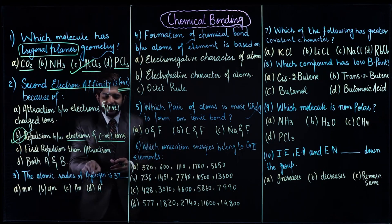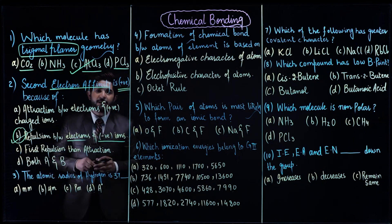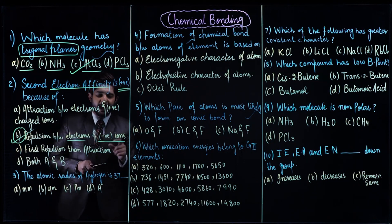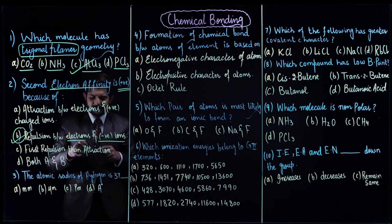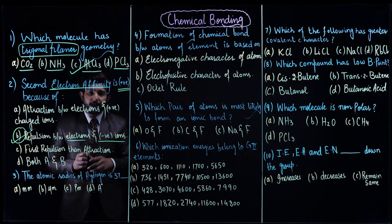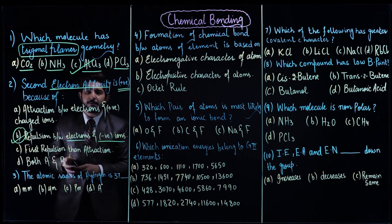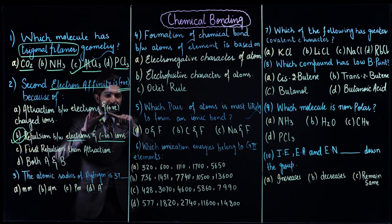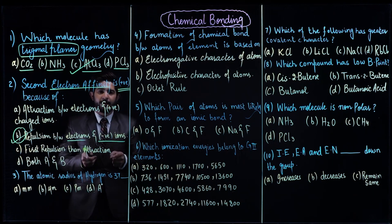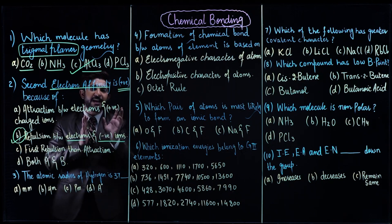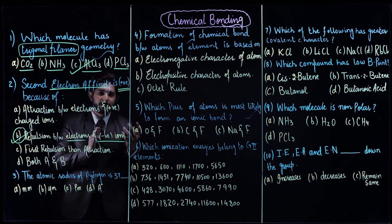The atomic radius of hydrogen is 37 — what is atomic radius? The radius of an atom. The word itself defines the term. Radius is: if you have a circle, the distance from its center to its boundary is called the radius.